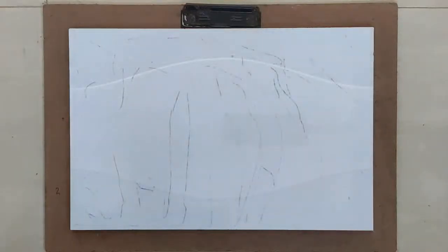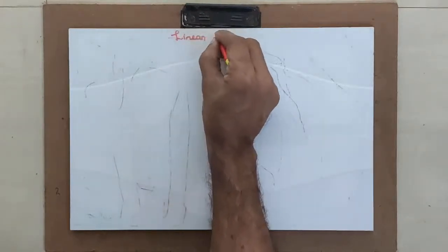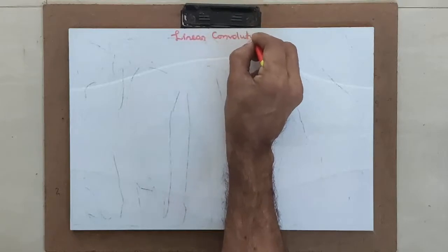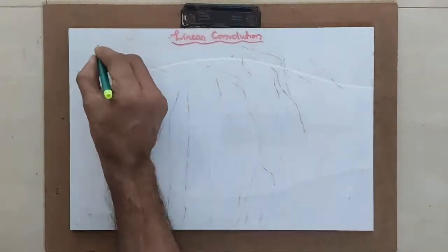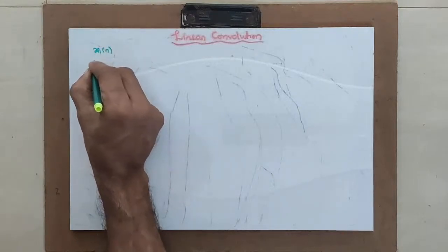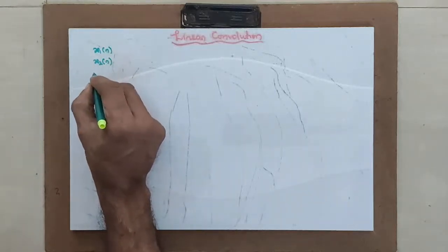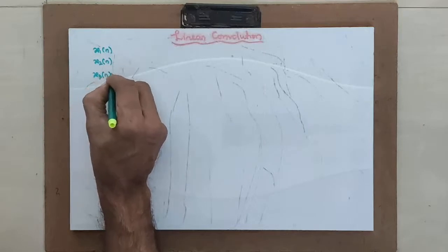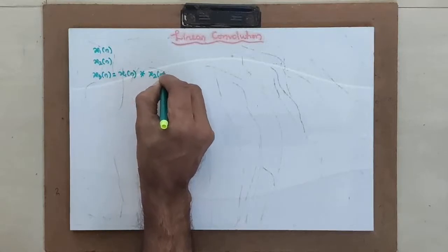Hello students, let us start today's class. Today I will be discussing about linear convolution. Let us see what exactly is linear convolution. We are having two signals here. First signal let us take it as X1N and second signal X2N. Now when I am linearly convoluting these two signals, I am obtaining the third signal X3N, which is X1N convoluted with X2N.